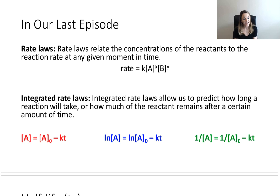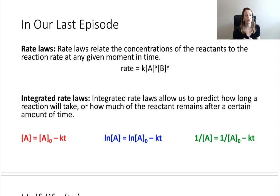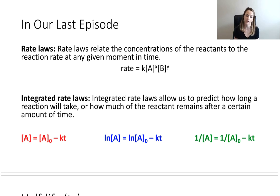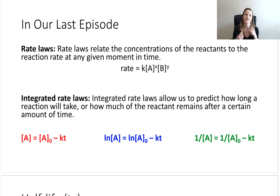The second thing we talked about is an integrated rate law. We do a little calculus, and we end up with integrated rate laws, which allow us to predict how long a reaction will take or how much of the reactant remains after a certain amount of time. These are two really important things, because the time feature is something we've never been able to do in general chemistry yet. This is the first time in almost nine months where we can actually include a time piece in our equations.